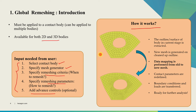Here is how global remeshing works. Let's say we have a body with some mesh. When Mark is going to remesh, in the first step Mark extracts the outline of this body, or a surface if it is a 3D body. That outline will be cleaned up and new mesh will be generated on it. Once the new mesh is generated, all data from the old mesh will be transferred to the new mesh — this includes all solution parameters, nodal quantities such as displacements, contact parameters, boundary conditions and loads. Once all this transfer is done, the new mesh will be ready for further analysis.